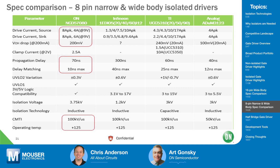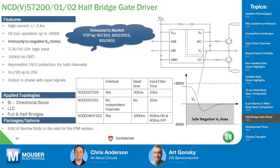Comparing the ON Semi NCD57000-80 versus Infineon, TI, and Analog Devices: ON Semi delivers 8 amps peak — with 4 amps source and 6 amps sink at 9 volts continuous drive. Output drop is only 200 millivolts, propagation delay is 70 nanoseconds with delay matching of 10 nanoseconds — critical when driving multiple parts on the high side simultaneously, as mismatched timing causes one part to sink all the current and potentially fail. Under-voltage lockout variation is held to 300 millivolts, well below competitors, with 100 kilovolts per microsecond CMTI and a 125°C operating temperature for industrial applications.